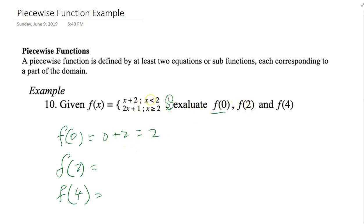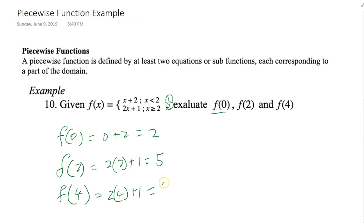For f of 2: since 2 is not less than 2, we use the second part — 2 times 2 plus 1 equals 5. For f of 4: 4 is greater than 2, so we use the second part — 2 times 4 plus 1 equals 9. That completes the evaluation of the piecewise function by plugging in.